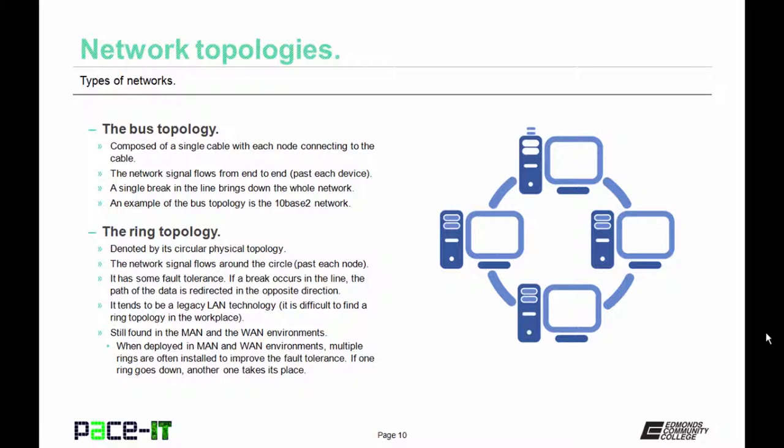When deployed in the MAN and WAN environments, multiple rings are often installed at the same time. This is to improve fault tolerance. If one ring goes down, another one steps up and takes its place.